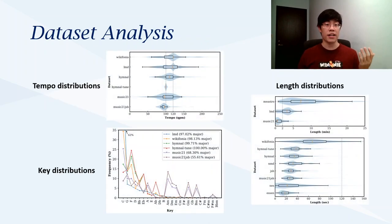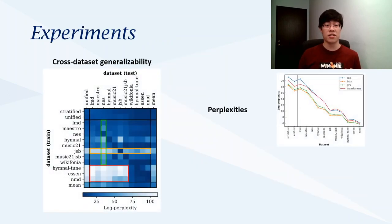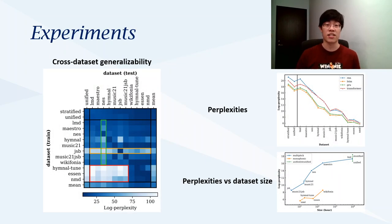So with MusePy, now we can do some analysis that might not be easily done before. For example, we find that the 11 datasets supported by MusePy have quite different tempo, key, and length distributions.